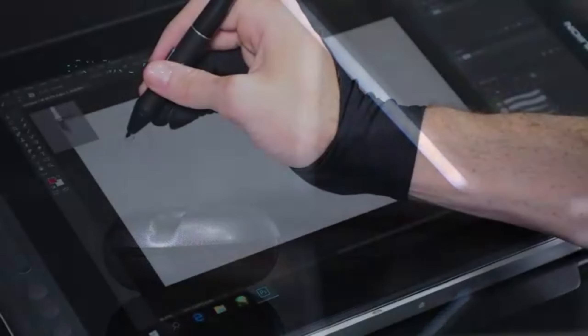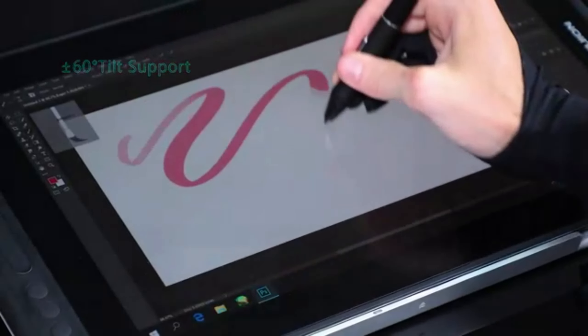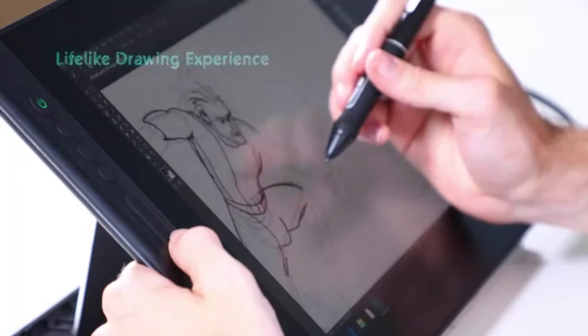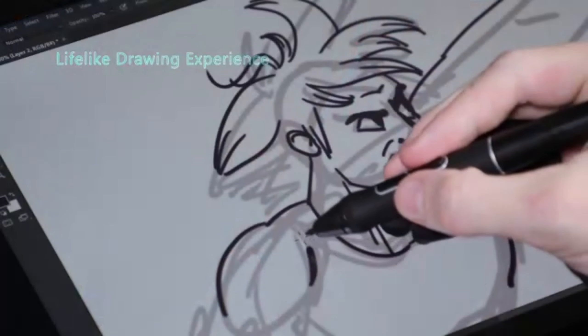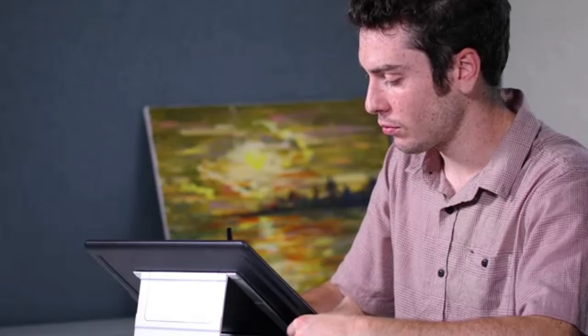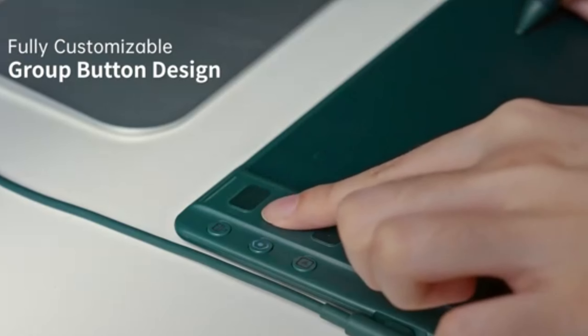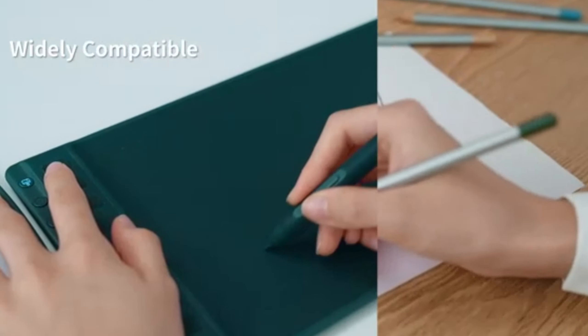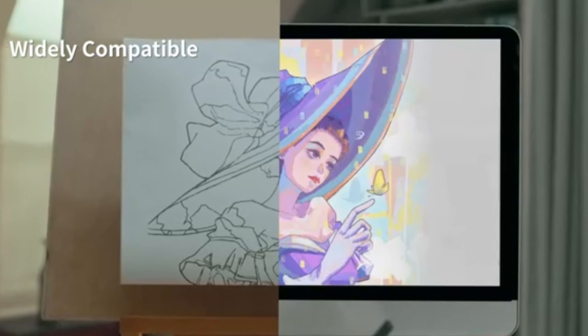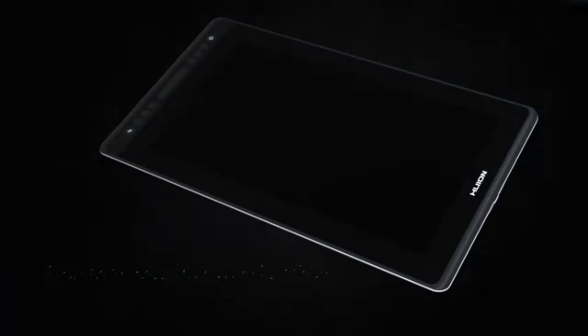Our first gadget on the list is the Huion Key Dial Mini Bluetooth Programmable Keypad. This compact wireless shortcut keyboard is a game changer for artists and professionals. With 5 keys and anti-ghosting technology, it's perfect for drawing tablets, PCs, MacBooks, Surface Pros, and laptops. Plus, it boasts 18 customized keys. Let's take a closer look.